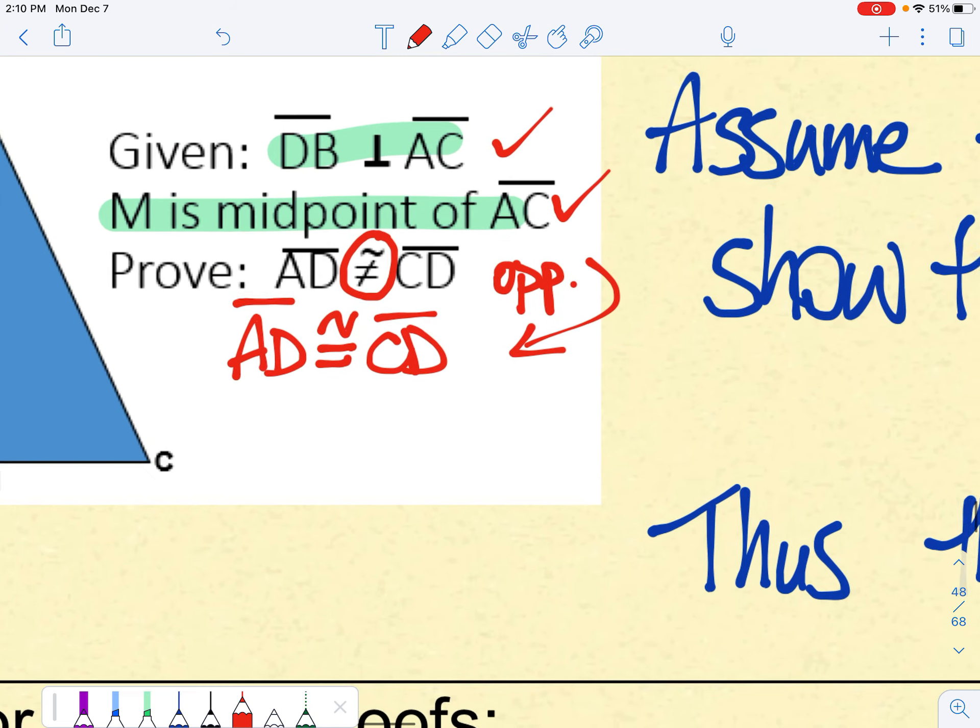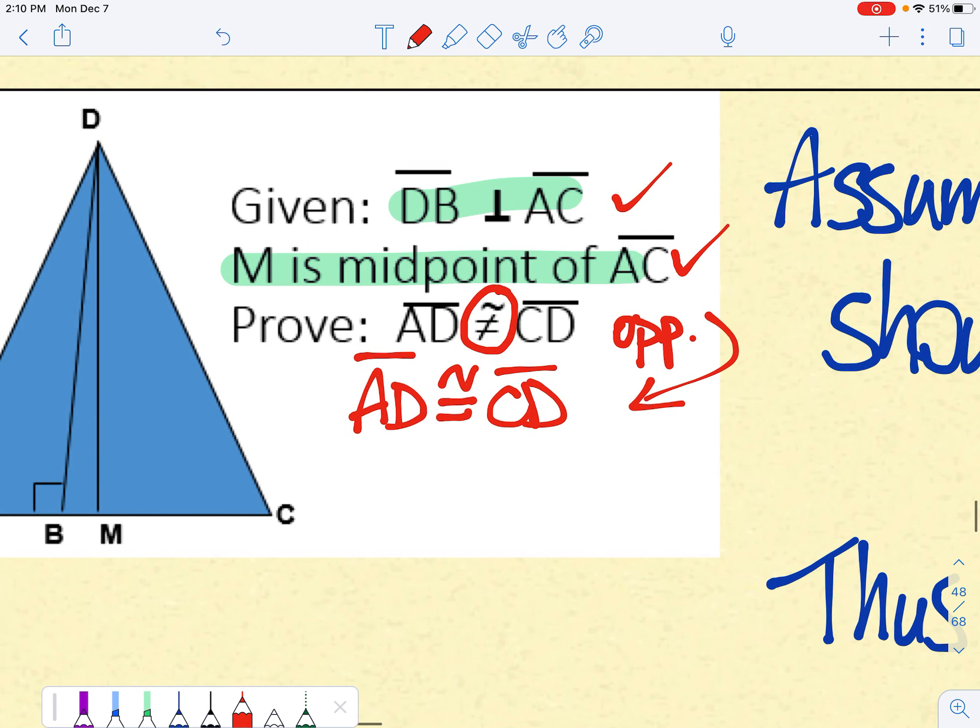And AD cannot be congruent to CD, but we then say AD must not be equal to CD. All right?